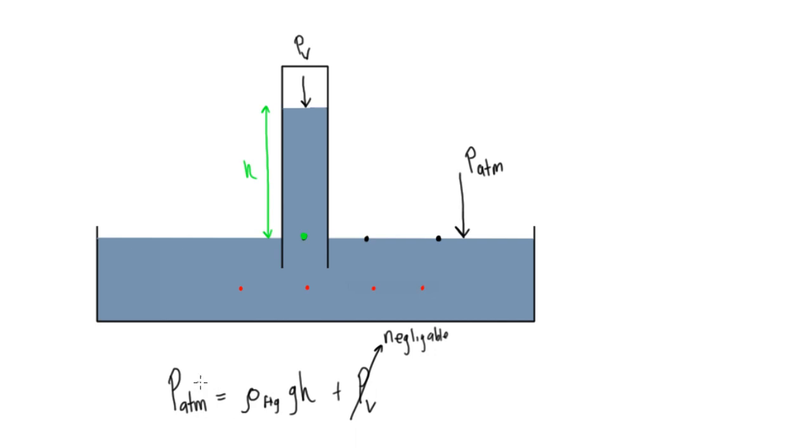So this whole expression here reduces to P atmosphere is just going to be equal to ρgh. Now, we could use water, but we're going to have a barometer that's going to be like 30 feet tall, we don't want that, because mercury is a lot denser, we can have a much more compact one.